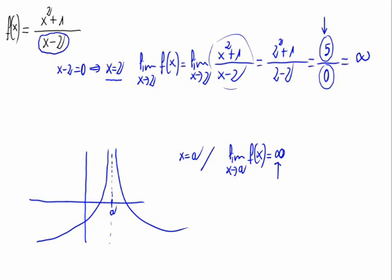We could also study the sign of the infinite, but it's not necessary in our case. As the limit is infinite, it means that x equals 2 is a vertical asymptote. And in our case, it is the only possible vertical asymptote of the function.